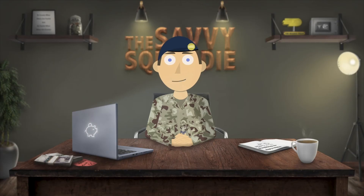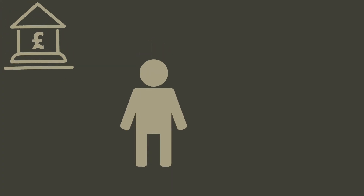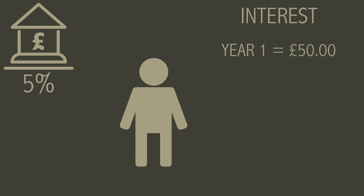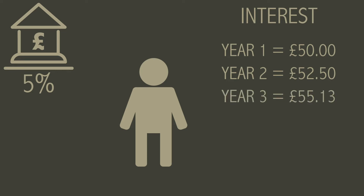That may be a bit confusing, so to help explain this, let's say you have £1,000 and you put it into a savings account with a 5% annual rate. At the end of the first year you would have gained £50 in interest, as 5% of £1,000 is £50. If you were then to leave that for another year, you would gain £52.50 as that is 5% of £1,050. The third year you would receive £55.13, bringing your total to £1,157.63.